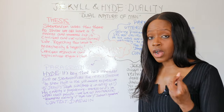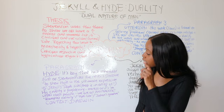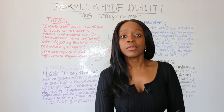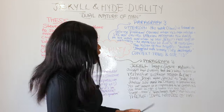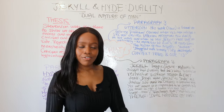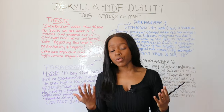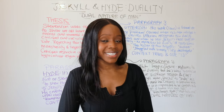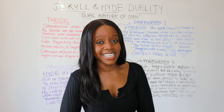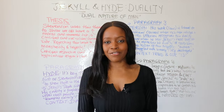So, if the theme of the dual nature of man comes up, start with your thesis statement, then dedicate your first paragraph to Hyde, your second paragraph to Dr Jekyll, and your third paragraph to Mr Utterson. Tomorrow I'll be running a one-off Dr Jekyll and Mr Hyde GCSE masterclass - make sure you join from 5pm. Thank you so much for watching.